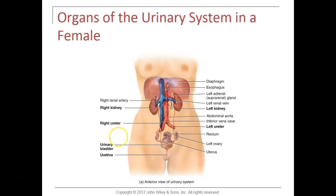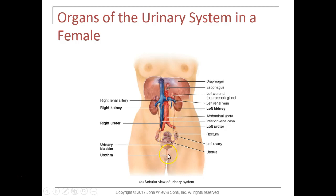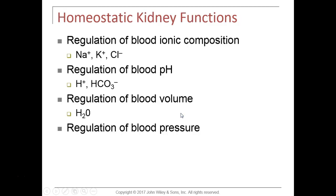Here's a picture demonstrating the parts of the urinary system. You see the two kidneys; the tubes that lead from the kidneys are called the ureters, and the ureters carry urine from the kidney down to the urinary bladder, which is a temporary storage site for urine. Then urine exits the body via the urethra. The gross anatomy is quite simple.